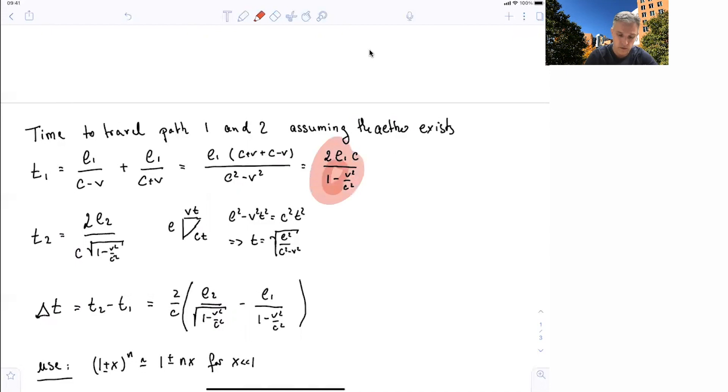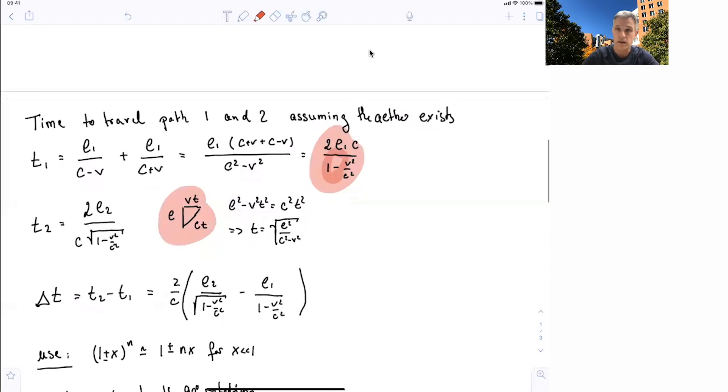For the second path, the one up and down, you want to draw this triangle here to figure out that the time it takes is equal to the square root L squared over c squared minus v squared. And then you simplify again, and you get this form with the square root again.